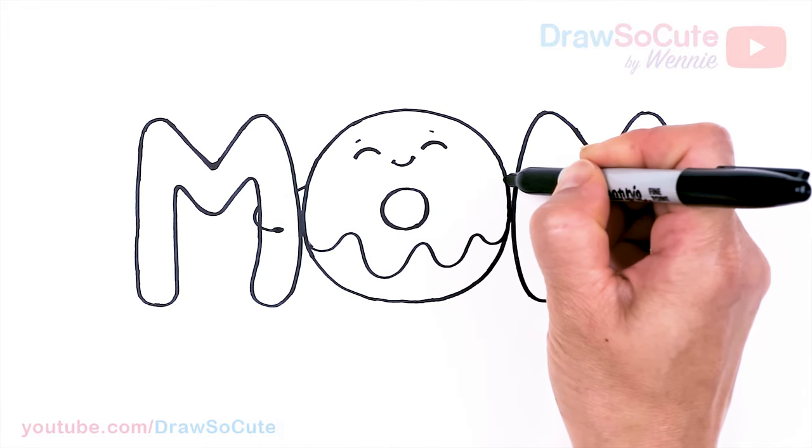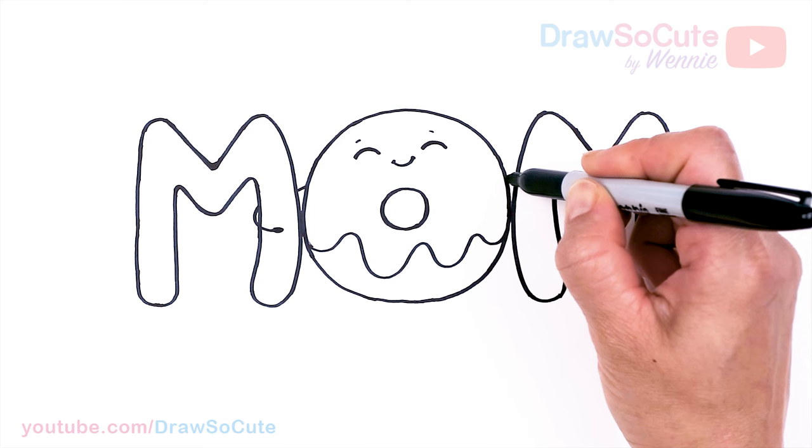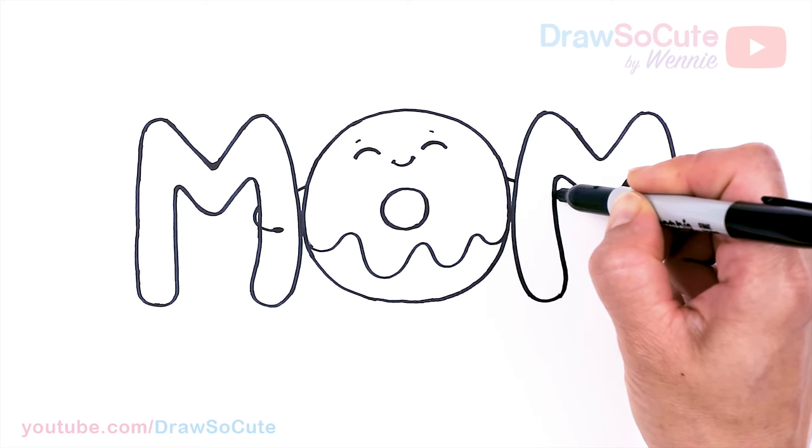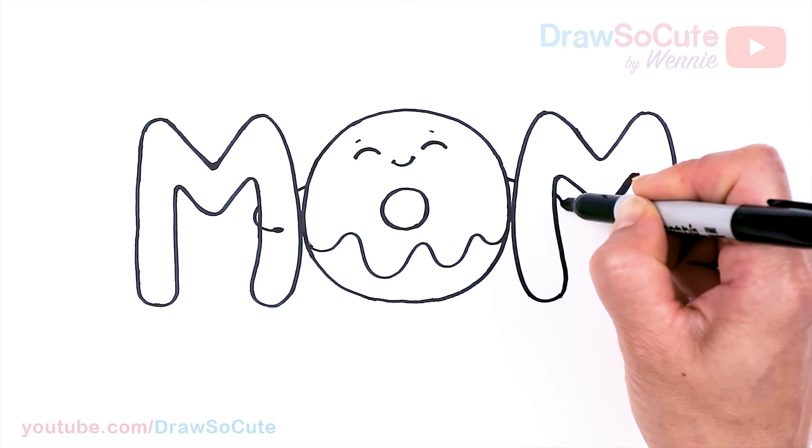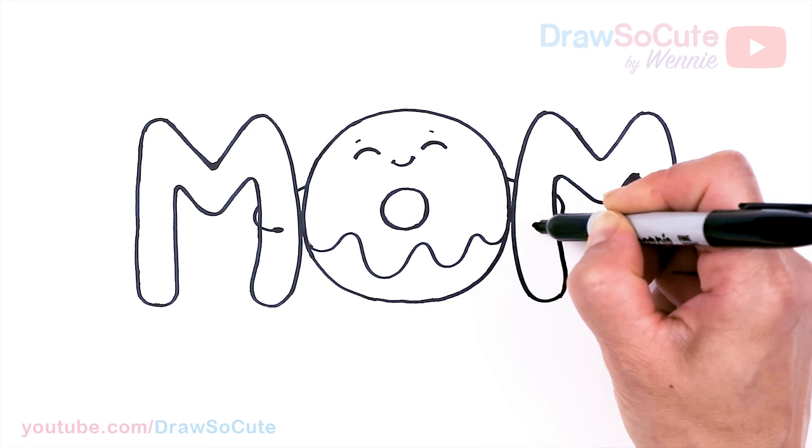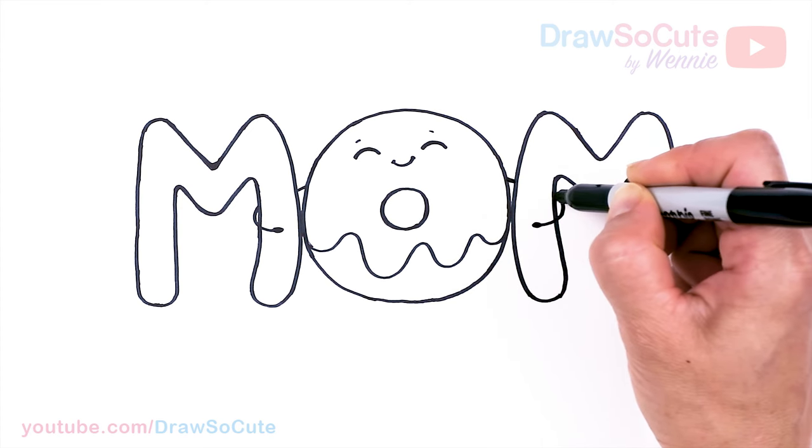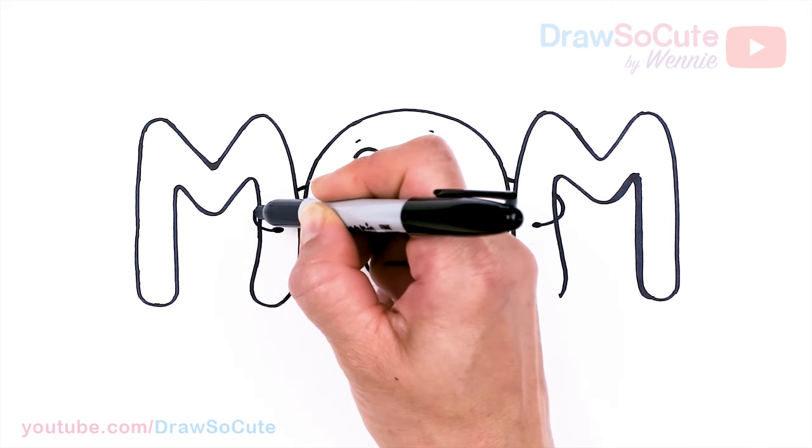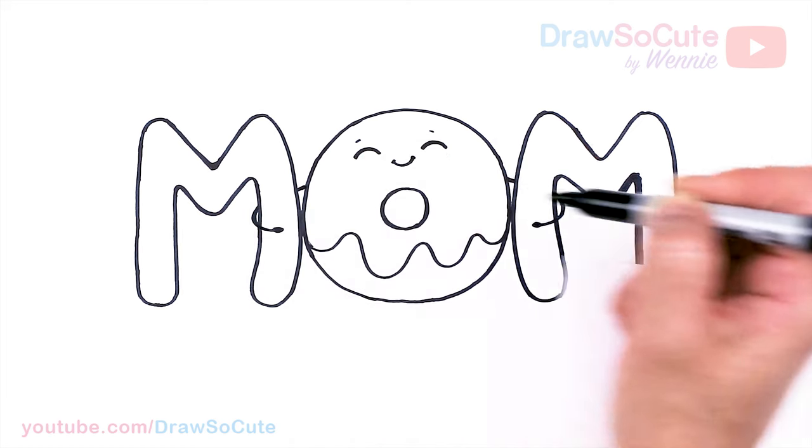So hopefully that looks like the donut is hugging. So same thing here. Just angle it. Bring it through. And just like the other side. And then thicken it up. There. I really hope this drawing brings a smile to your day and to your mom's day of course.